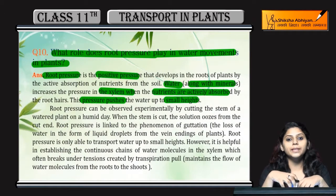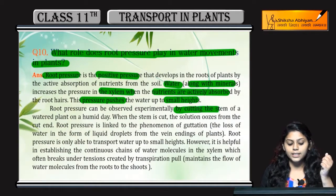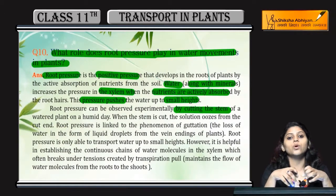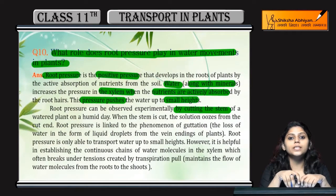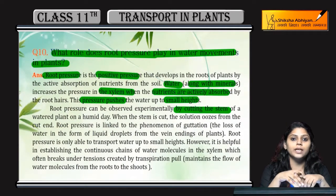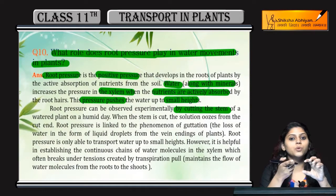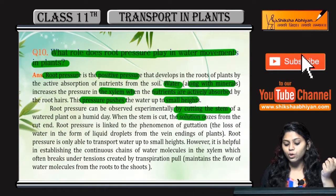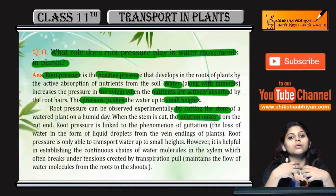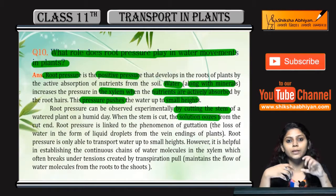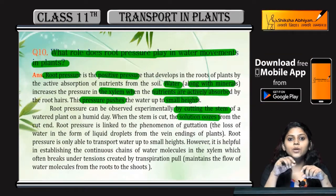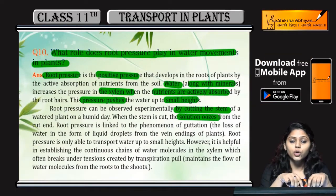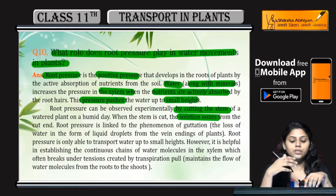Ye experimentally bhi dhek sakti hai — by cutting the stem of a water plant on a humid day. Humid day mein joh plant ne water kiya hai, uski stem ko agar cut karke dhekhenge, toh aap dhekhoge kuchh solution ooze out hoota hai from that portion. Woh hoota hai because of the root pressure there.